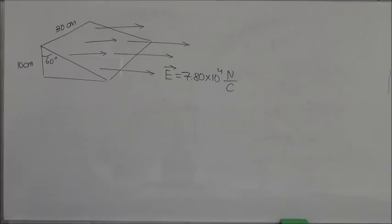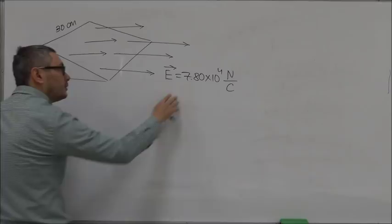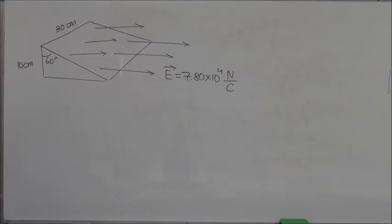In this problem we have a triangular prism where this side is 10 centimeters, this side is 30 centimeters, and the angle here is 60 degrees, so it's slanted at 60 degrees with respect to vertical. This prism is in a uniform electric field which is pointing straight this way. The question in part A...